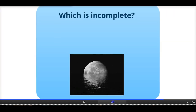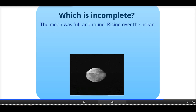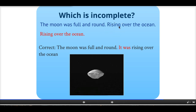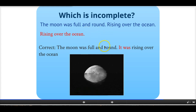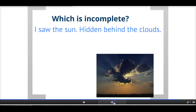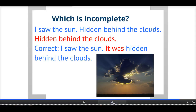Which one is incomplete? 'The moon was full and round. Rising over the ocean.' The second one. Keep in mind you can never have just an -ing verb as your only verb in a sentence — that's an error and makes it a phrase. To correct it: 'The moon was full and round. It was rising over the ocean.' We need 'it was' to make it a complete sentence. Similarly: 'I saw the sun. Hidden behind the clouds.' The second part is incomplete. We need to add 'it was': 'I saw the sun. It was hidden behind the clouds.'